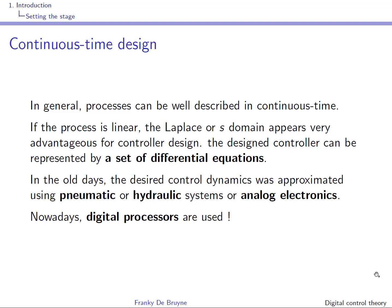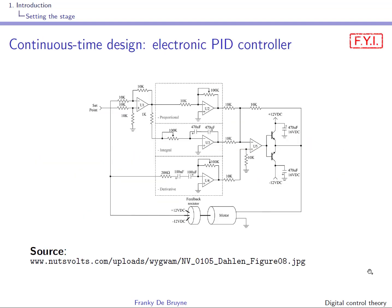Nowadays, of course, we work with processors, so we have to take into account the discrete time nature of the signals and the fact that the signals are quantized — we speak of digital controllers. What you see here is the electronic schematics for an analog PID controller used to control the motor shaft position of a DC motor. You can see that the proportional, integral, and derivative parts are implemented using an operational amplifier.